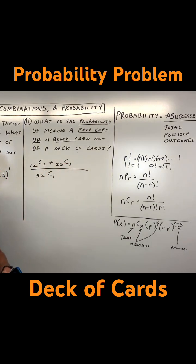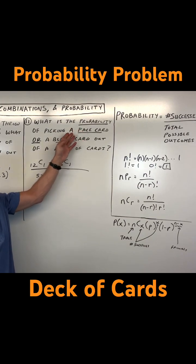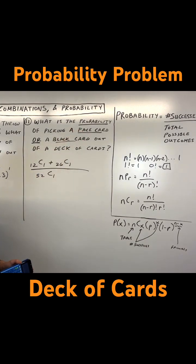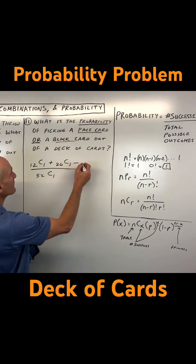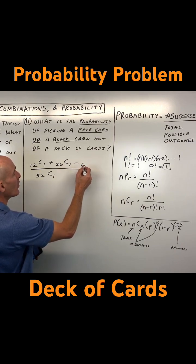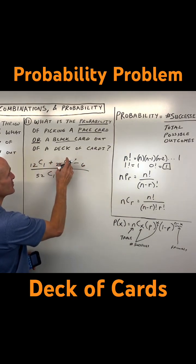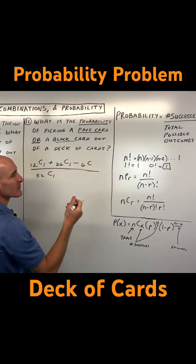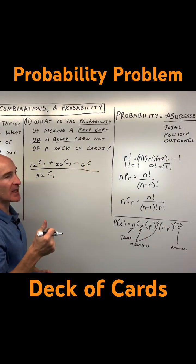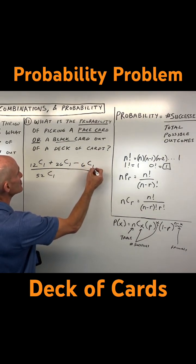But you see there's an overlap here. Some of the face cards are black, which means that we're going to have to subtract off the ones that we're double counting — that we counted in this group and this group. So that's going to be minus the six clubs and spades face cards. Choose one of those.